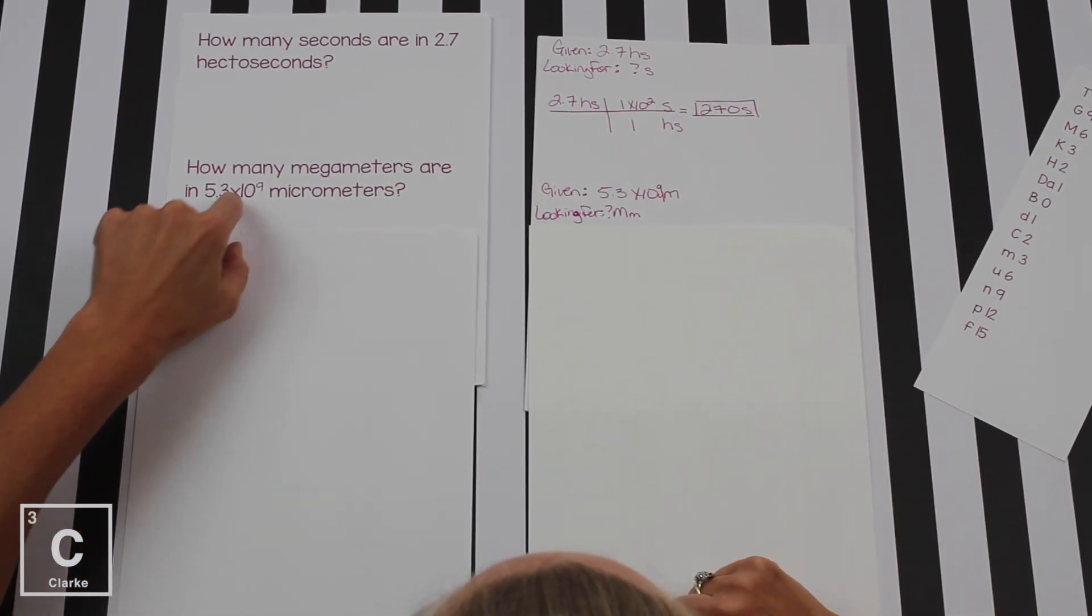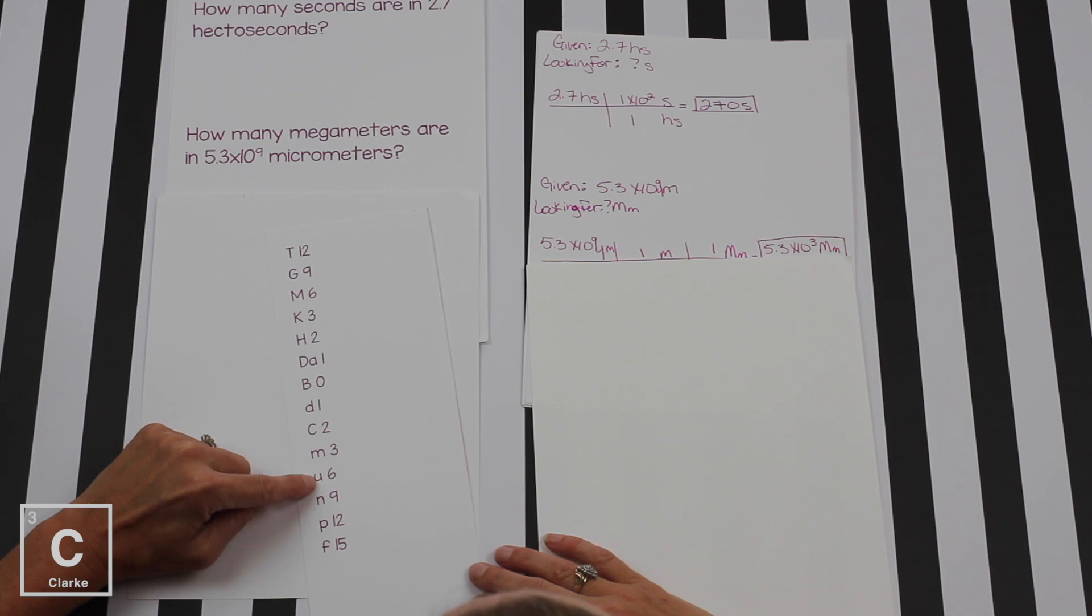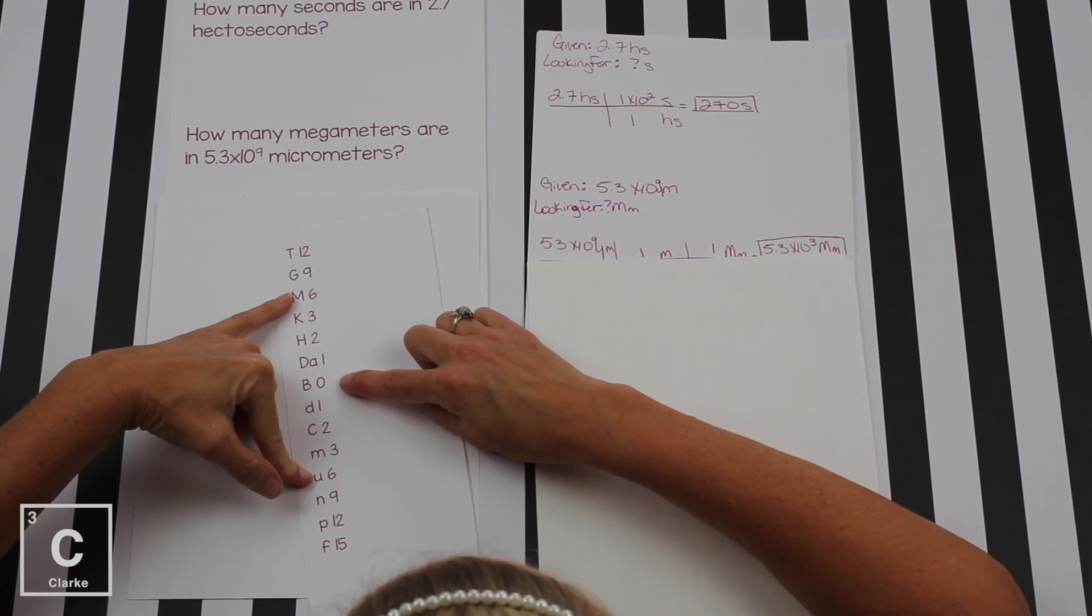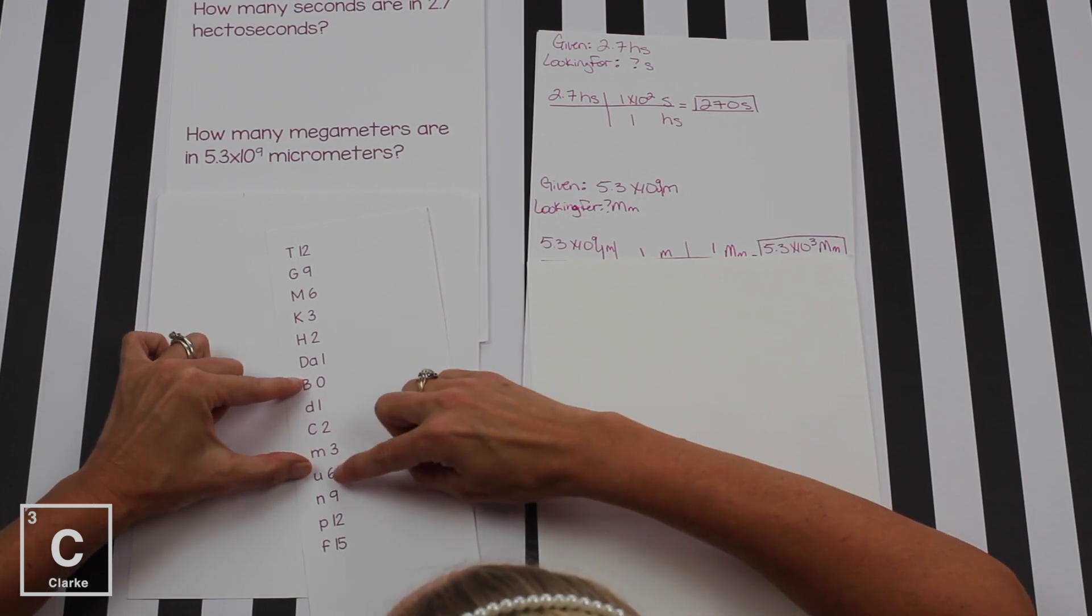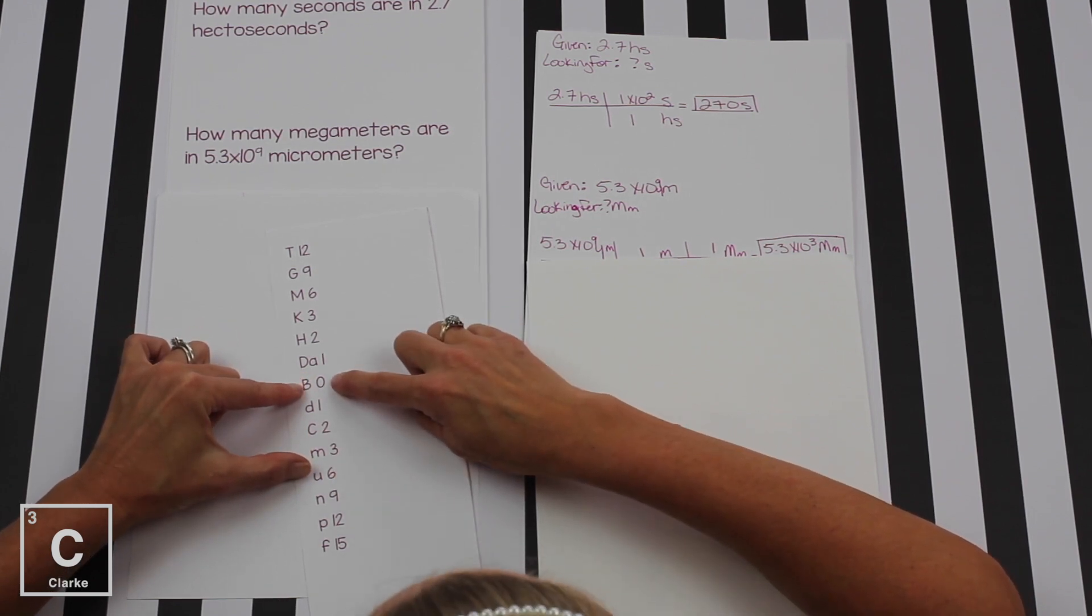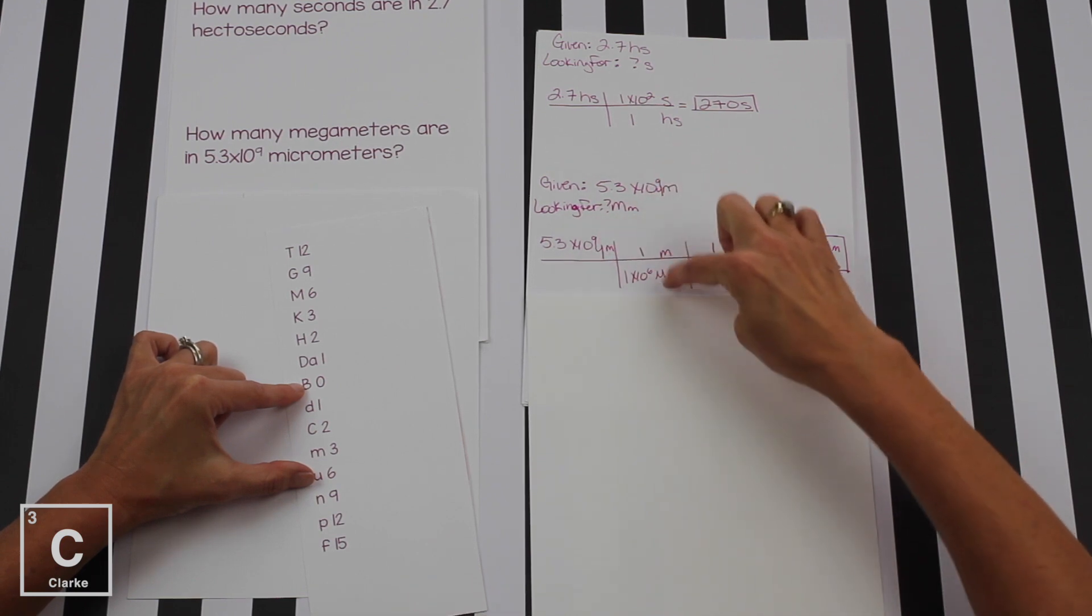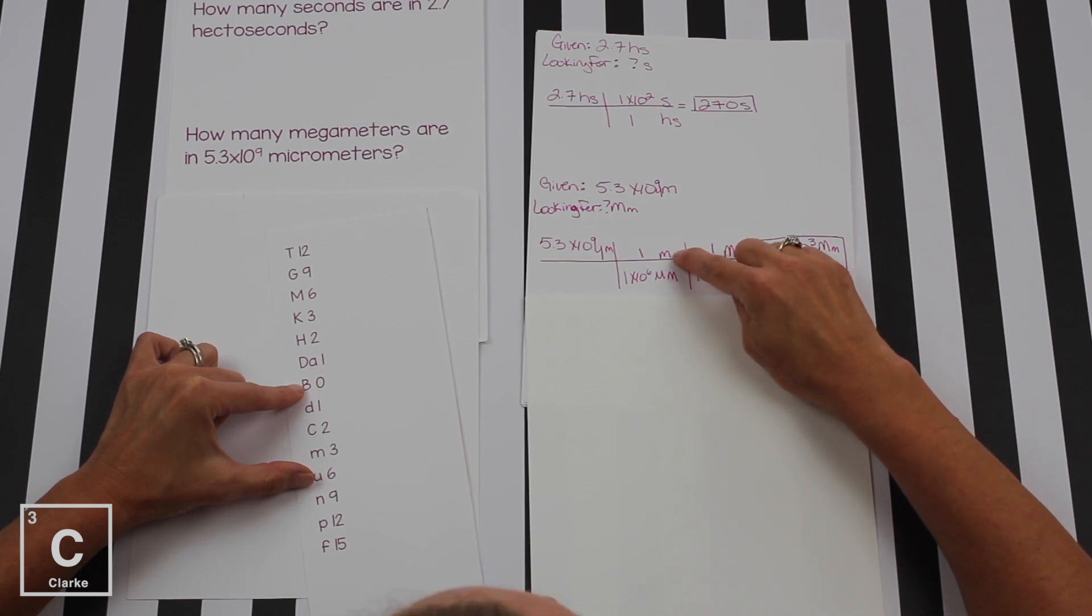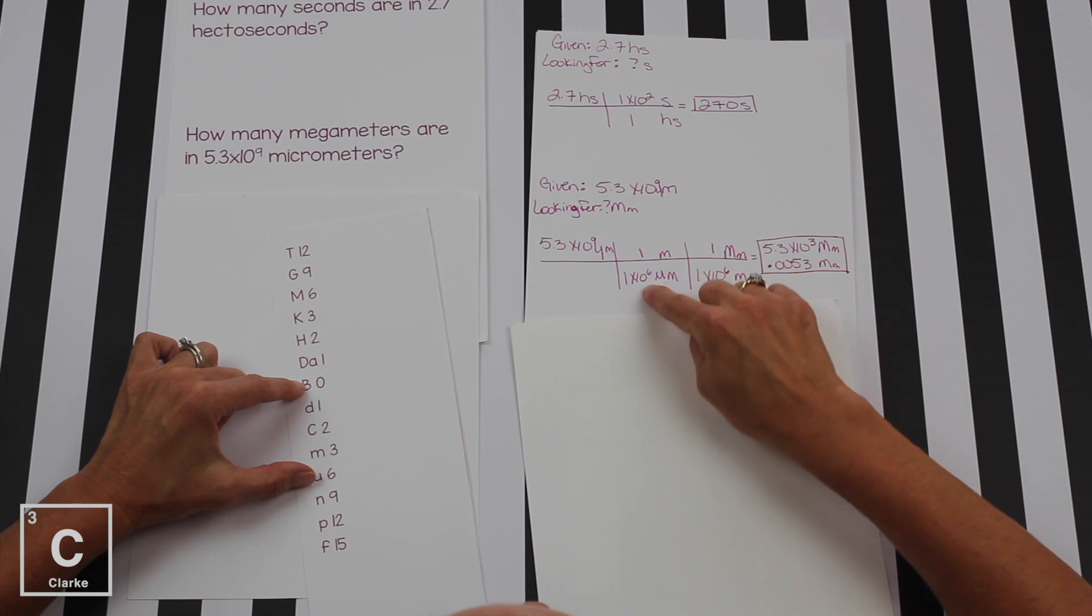Our given is 5.3 times 10 to the 9. What are we looking for? How many megameters? So we're going to start at micrometers with that funky little U. We're going to go all the way up to mega. We've got to go through the base unit. All conversion factors have to have a base unit. So our first conversion factor is going to go from micro to the base meters. Take your given unit, put it down to the bottom. They've got to stay diagonal. So since micro is on bottom, just regular meters is going to be on top. The base unit is higher, so it's bigger. It gets a 1. And that 6 is going to stay with the micro, 1 times 10 to the 6.